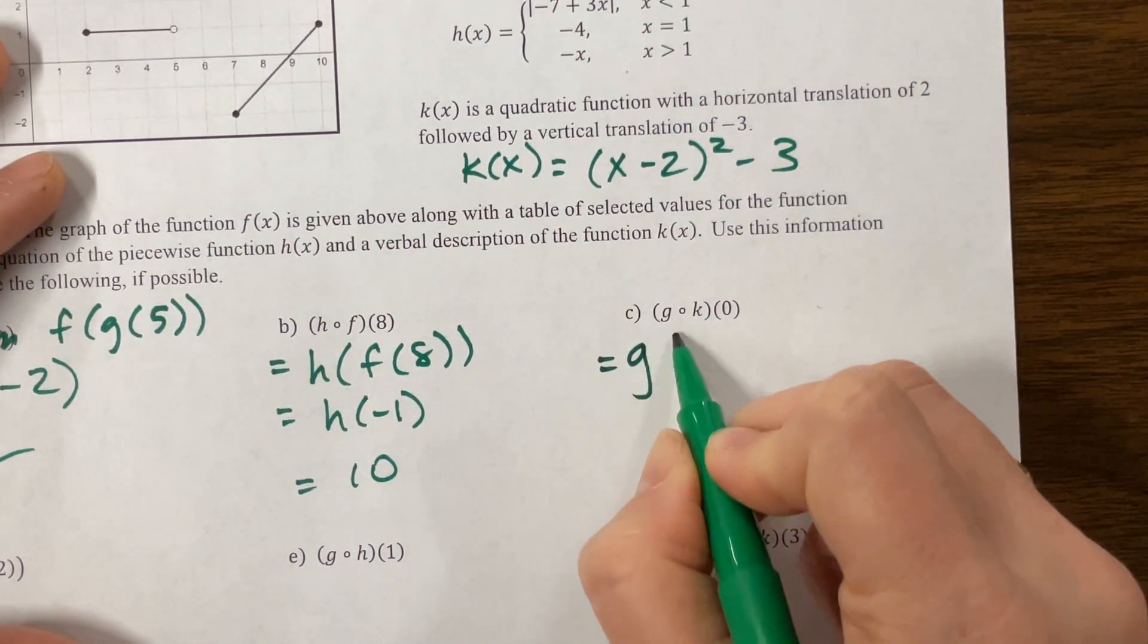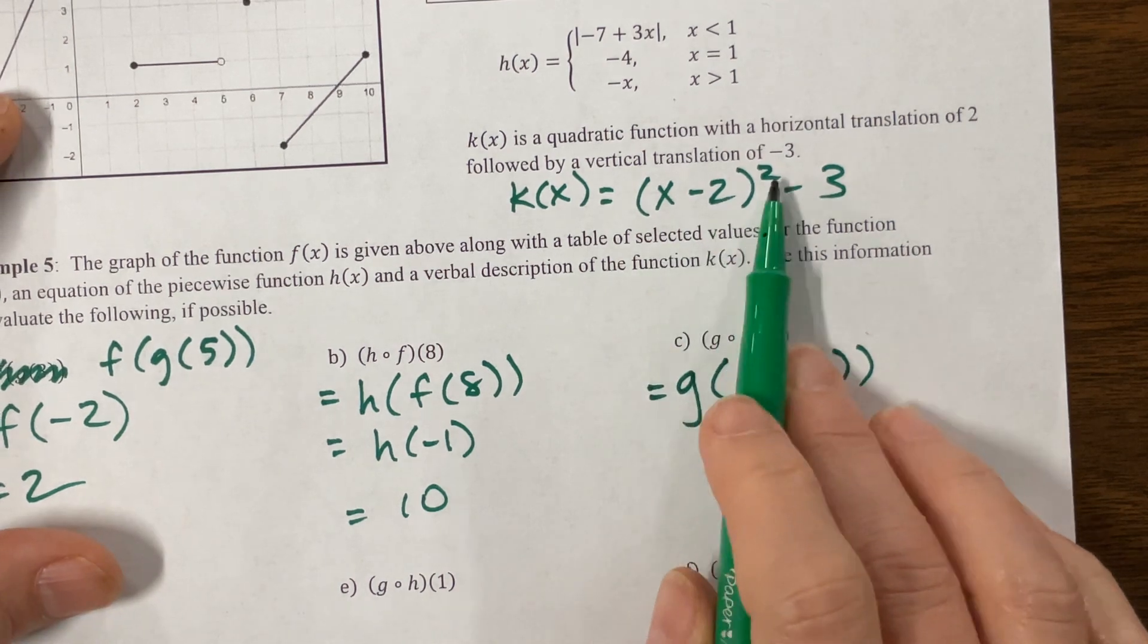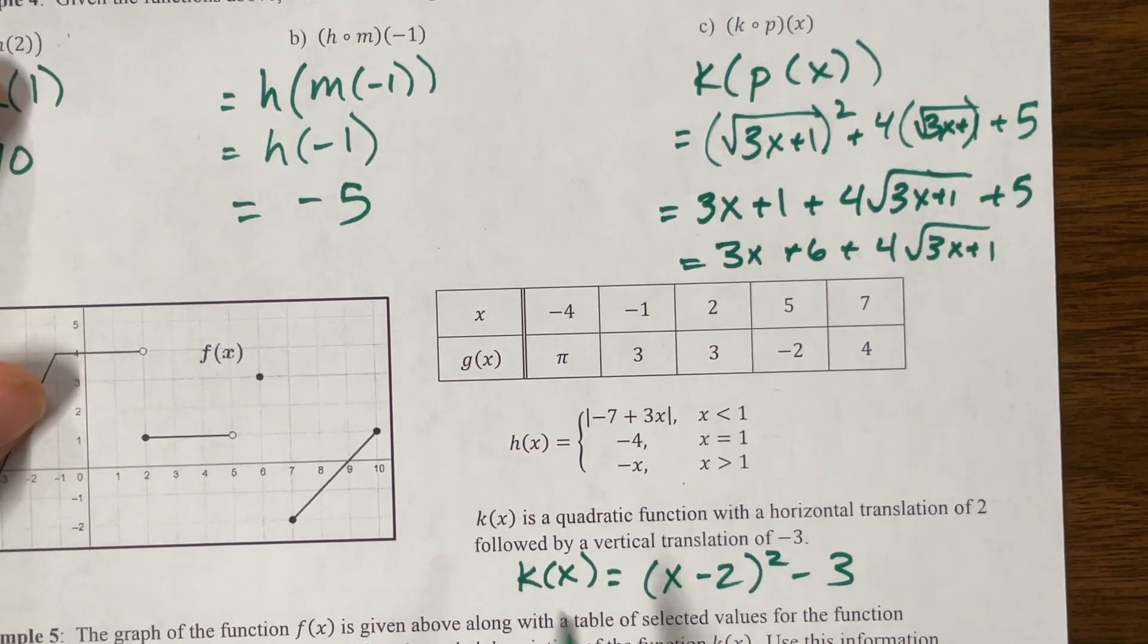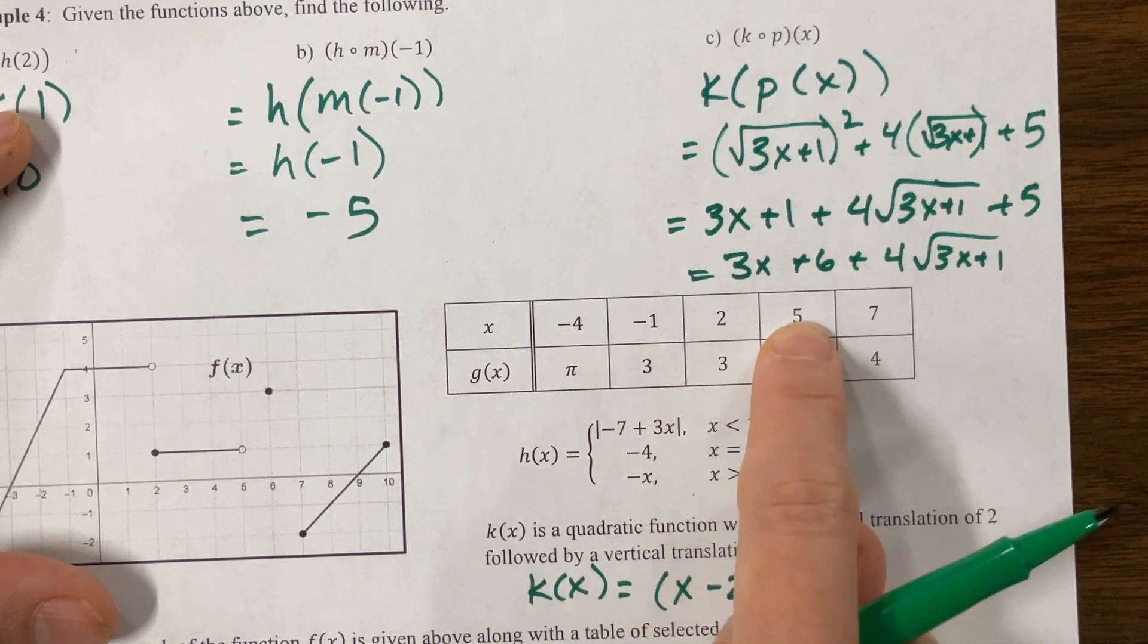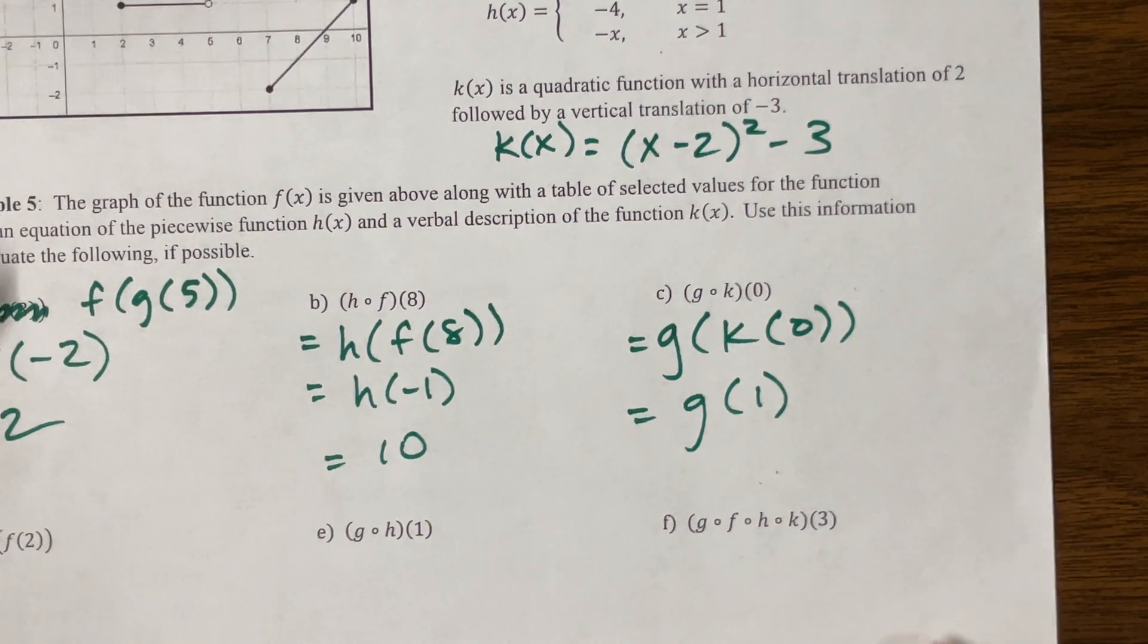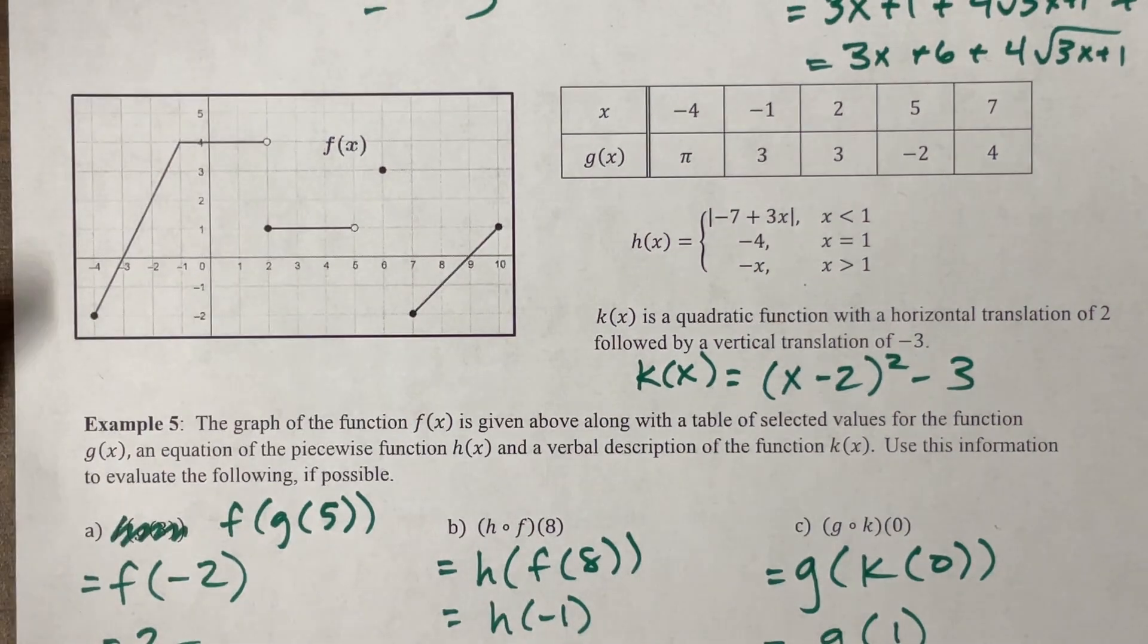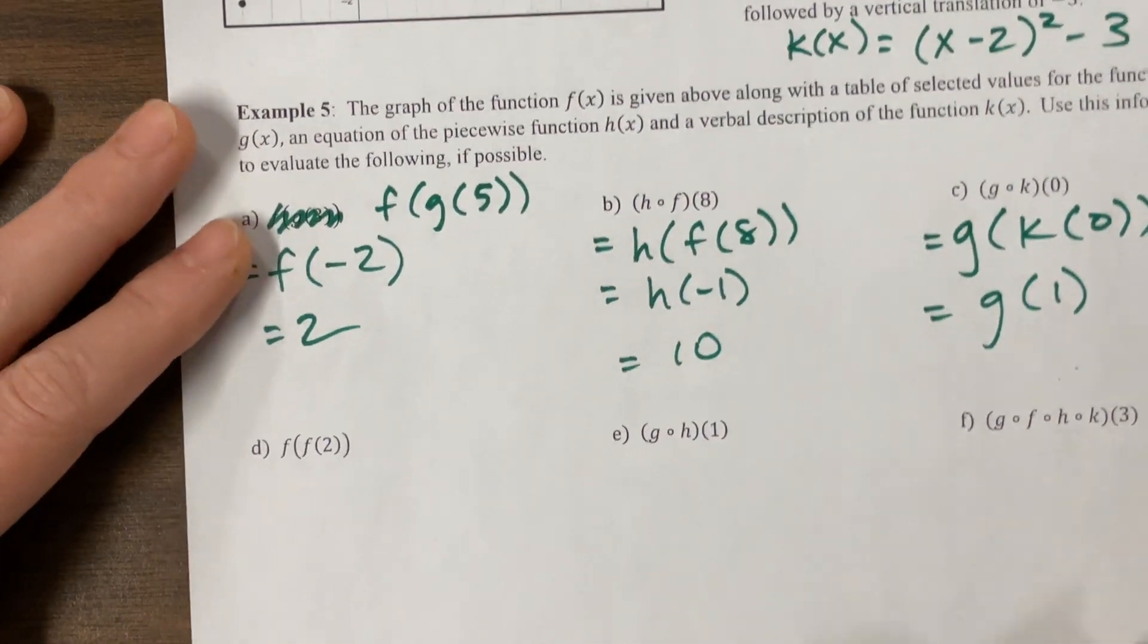So now this is equal to g of k of 0. k of 0 means this is negative 2 squared is a positive 4 minus 3 is 1. So this is g of 1. These problems are tricky to write. There is no g of 1. There's g of negative 4, negative 1, 2, 5, and 7. So we could change that problem if we want to. Unless I'm missing something. If you notice that there wasn't a mistake and you see what I'm not seeing, comment below, but tell me nicely. A little civility goes a long way.